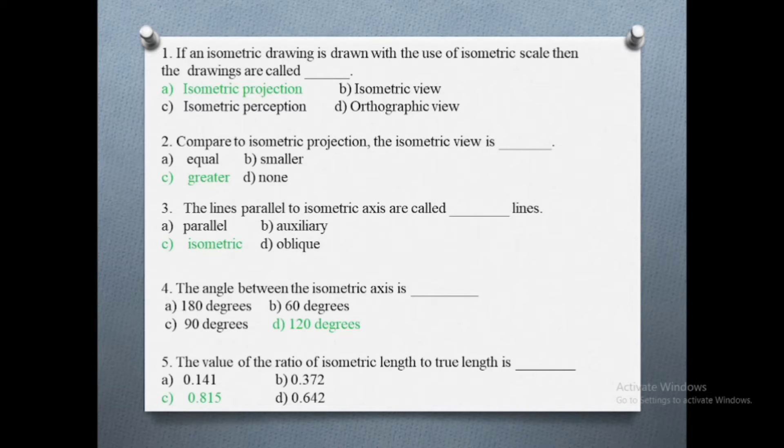Fifth question: the value of the ratio of isometric length to true length is. Options are: a) 0.141, b) 0.372, c) 0.815, d) 0.642. The correct answer is 0.815.